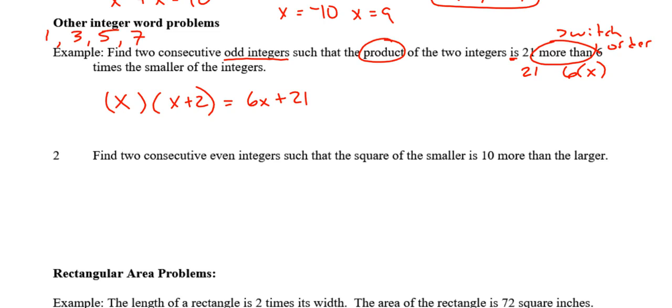Let's distribute. x squared plus 2x equals 6x plus 21. I want that equal to 0, so subtract 6x and 21. I get x squared minus 4x minus 21 equals 0. Factors of 21 that subtract to give negative 4 are x minus 7 and x plus 3. So x equals 7 and x equals negative 3.